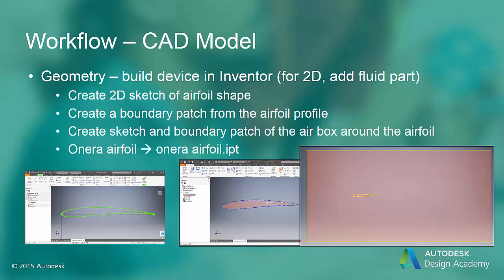For this example, a 2D airfoil shape is built in Inventor. The points are read in from a spreadsheet and connected with spline fit lines. The enclosed shape is then used to create a boundary patch. Inventor boundary patches are treated as 2D surface bodies by CFD. For 2D CFD analyses, the 2D CAD geometry should contain boundary patches for each part or 2D surface used in the CFD analysis. An Inventor part for the first 2D example has already been created.